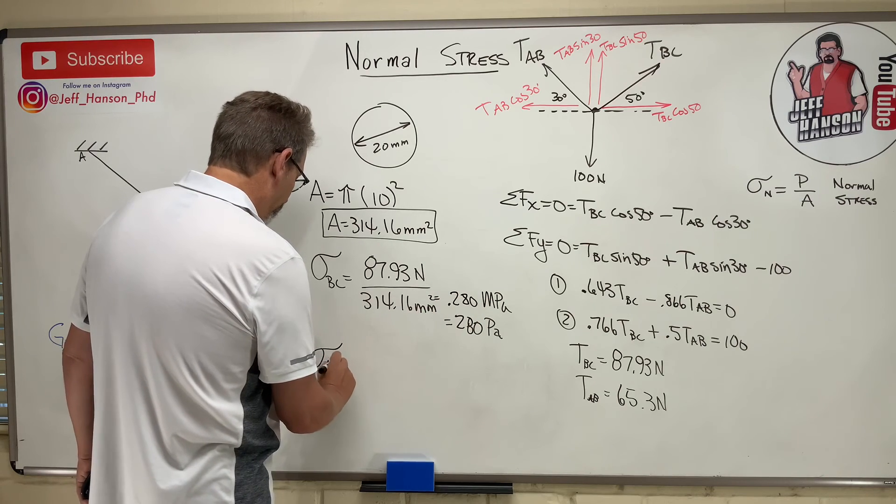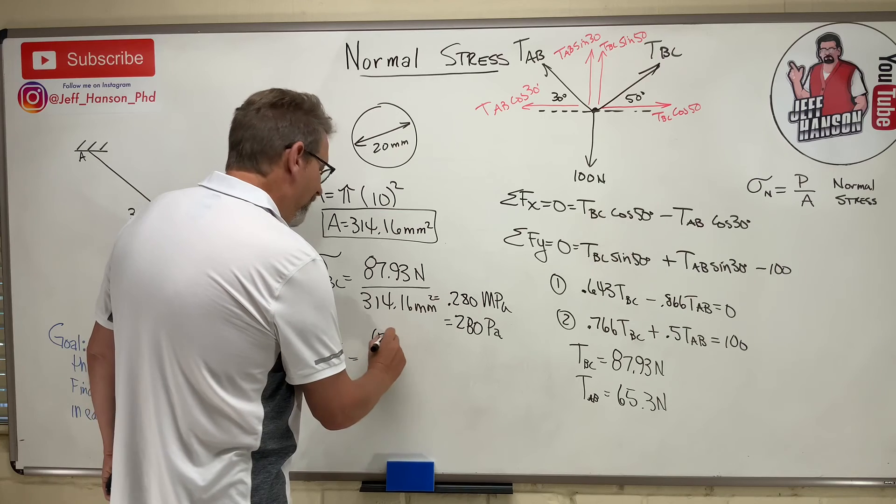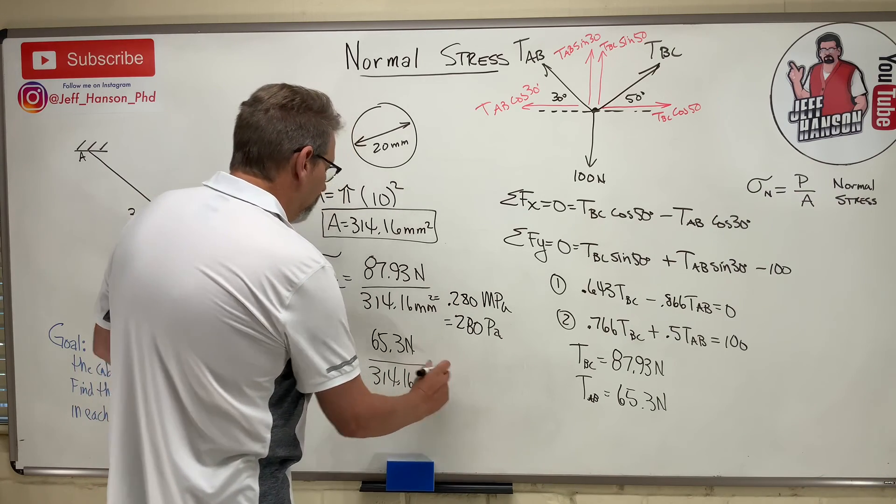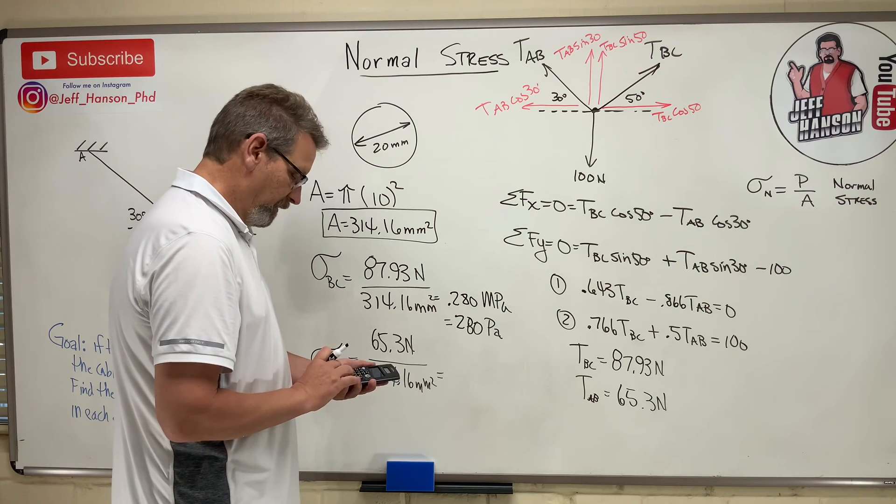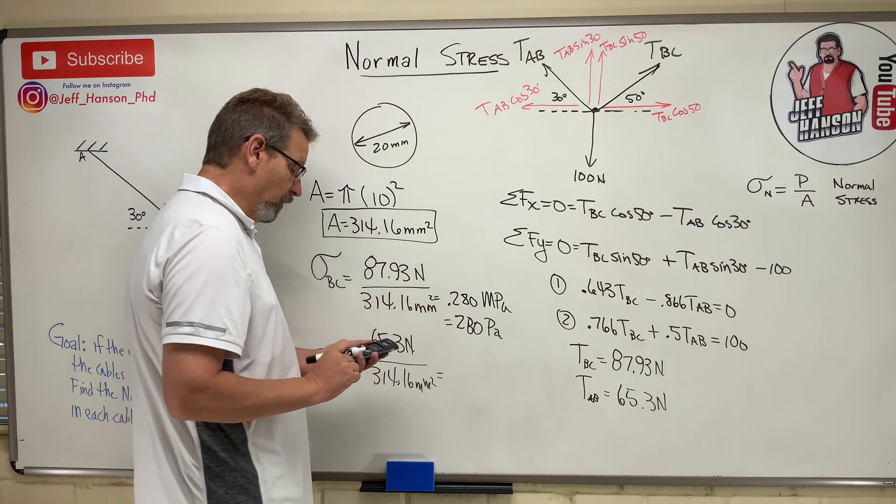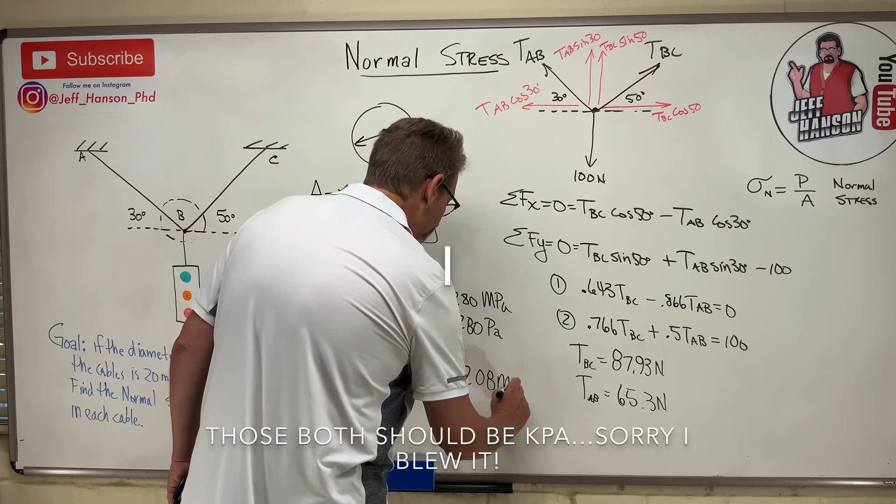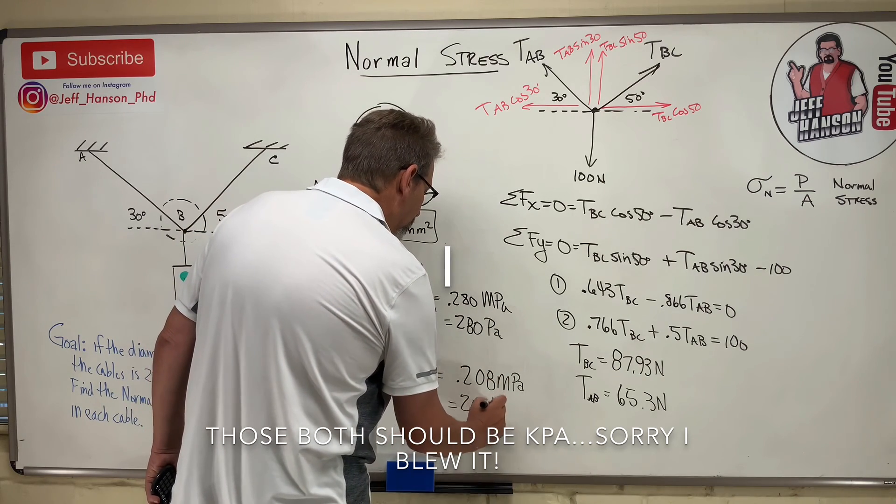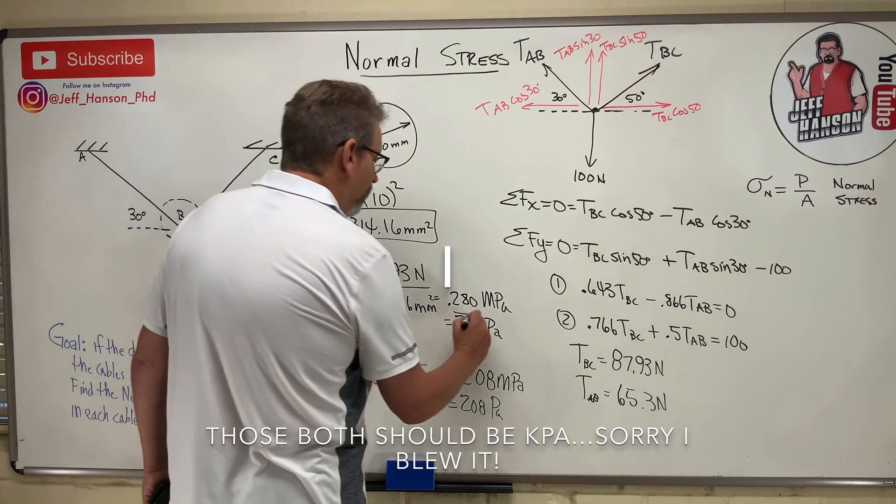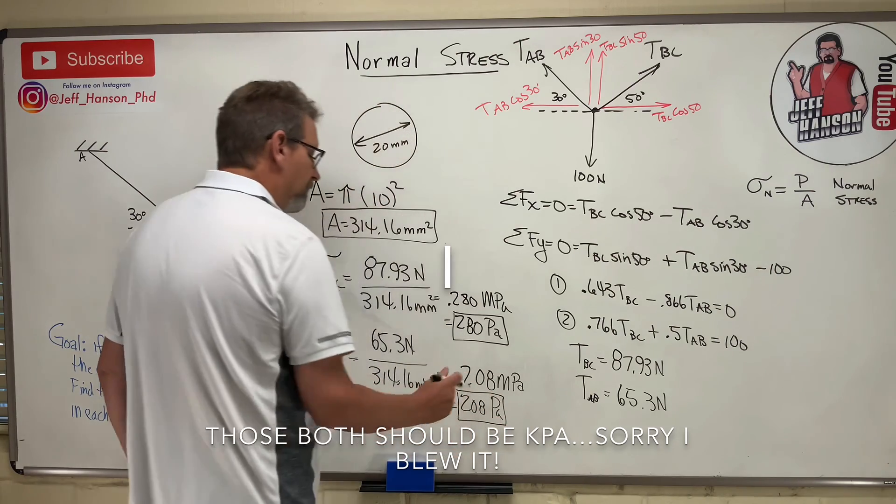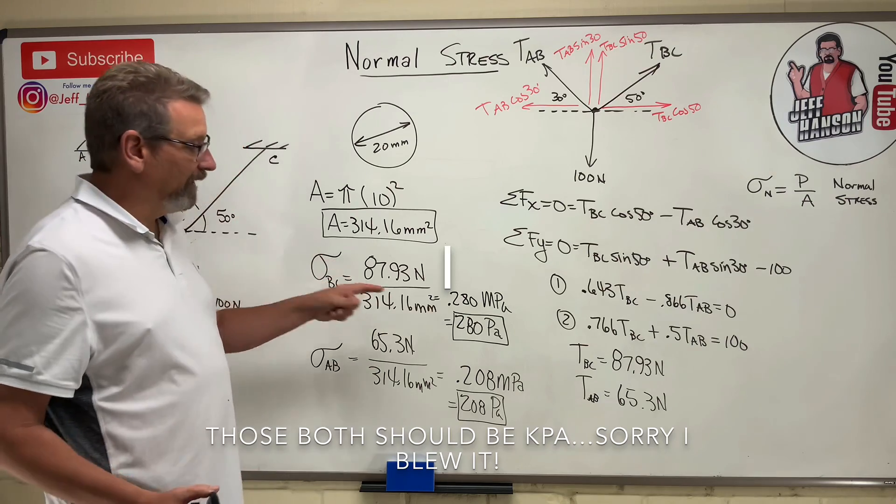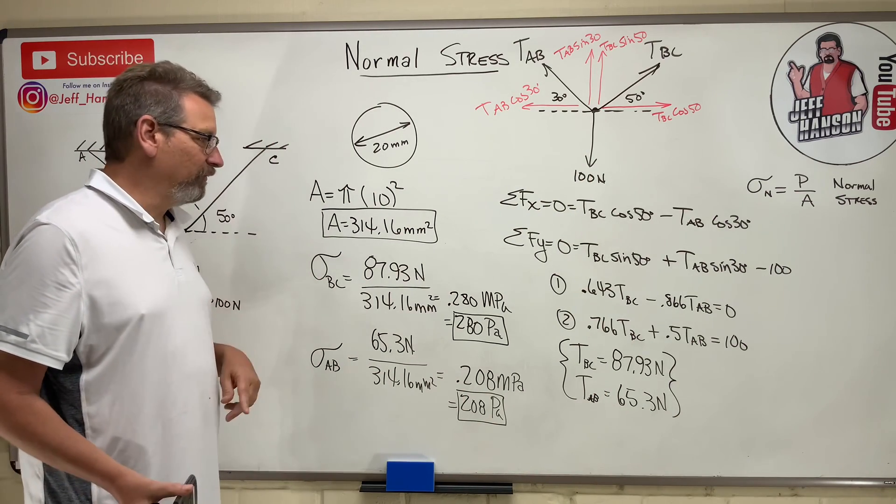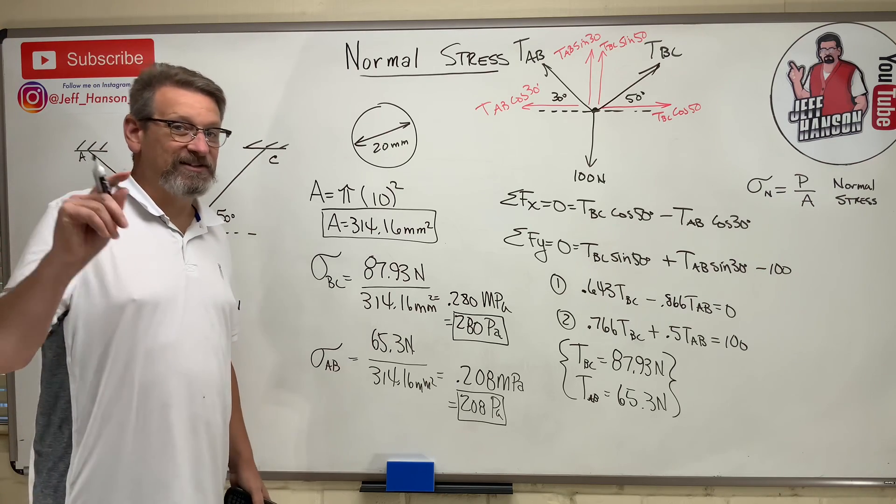So that was BC. The next one is AB, and for AB it was 65.3 newtons divided by the same cross-sectional area, 314.16 millimeters squared. And so that guy is 65.3 divided by 314.16, point 208. That one was 0.280, that one's 0.208, or 208 pascals. And that is how you find the normal stress. So it's just P over A, but step one is find out what is the P, right? So there's the P's. And there's the A, the cross-sectional area, and that's all there is to that. I'm sure we'll work a harder one next time and see if we can figure that out. Stay tuned.